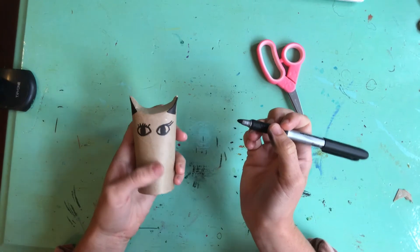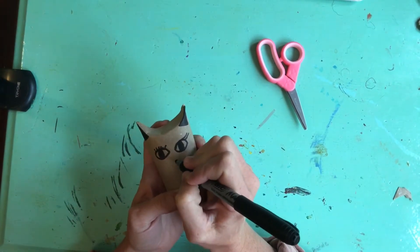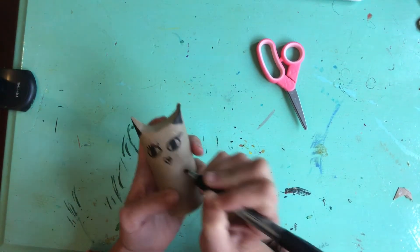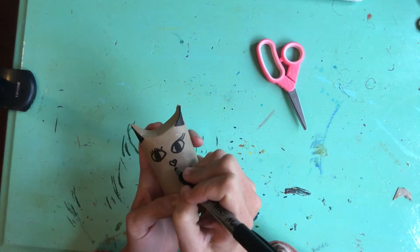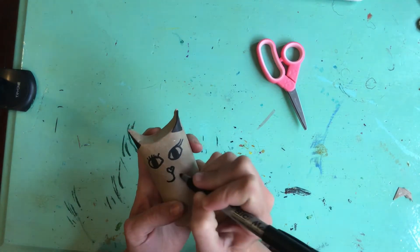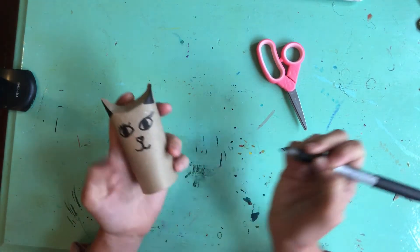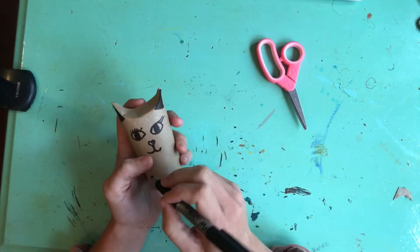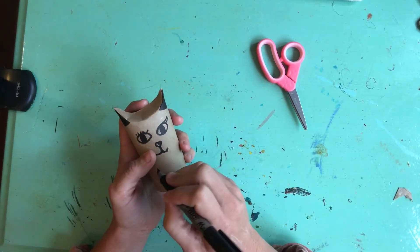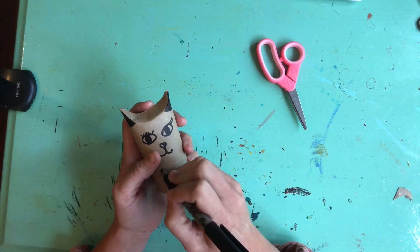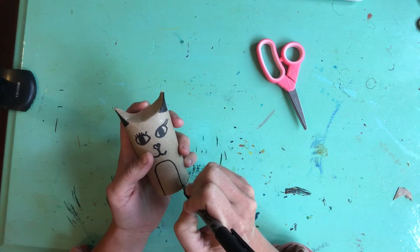All right, let's start the nose. Just do a little heart and then come down with a J and then a backwards J. Okay, so now you can create a little belly.